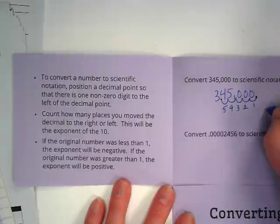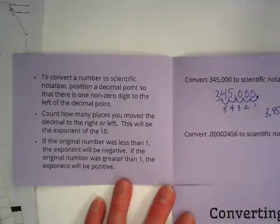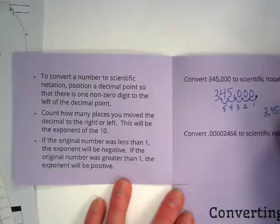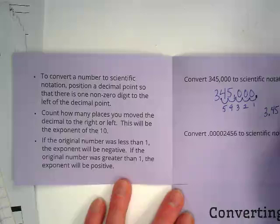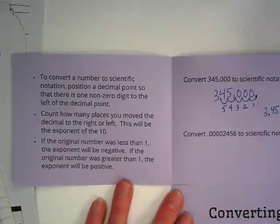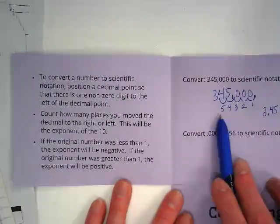So we're going to rewrite this as 3.45, and I'm going to ignore those extra zeros there, times 10 to the fifth power. Where did I get the fifth? Because I moved the decimal how many places? Five.